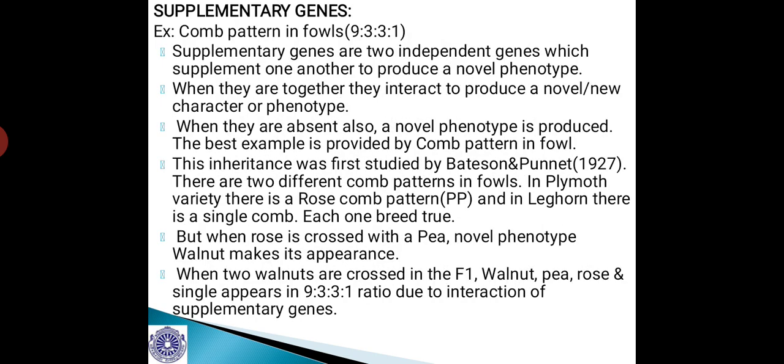One such interaction of genes is supplementary genes — for example, comb pattern in fowls showing a ratio of 9:3:3:1 in F2 generation. Supplementary genes are two independent genes which supplement one another to produce a novel phenotype. When they are together they interact to produce a novel character, and when they are absent also a novel phenotype is produced. The best example is provided by comb pattern in fowls (poultry birds), and this inheritance was first studied by Bateson and Punnett in 1927.